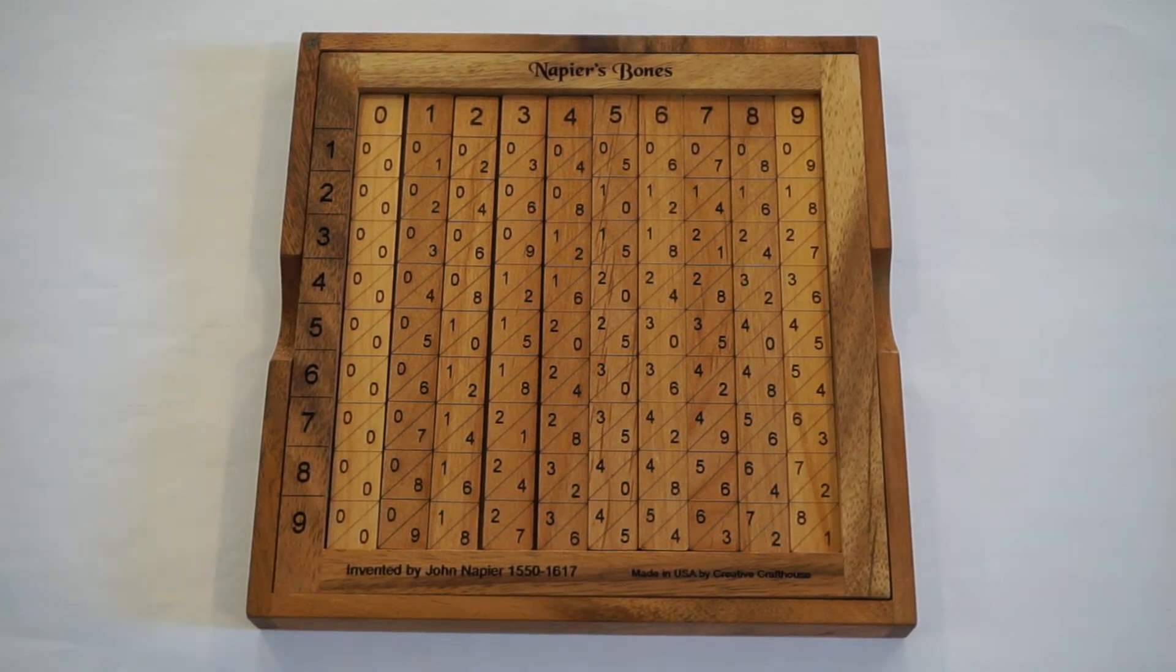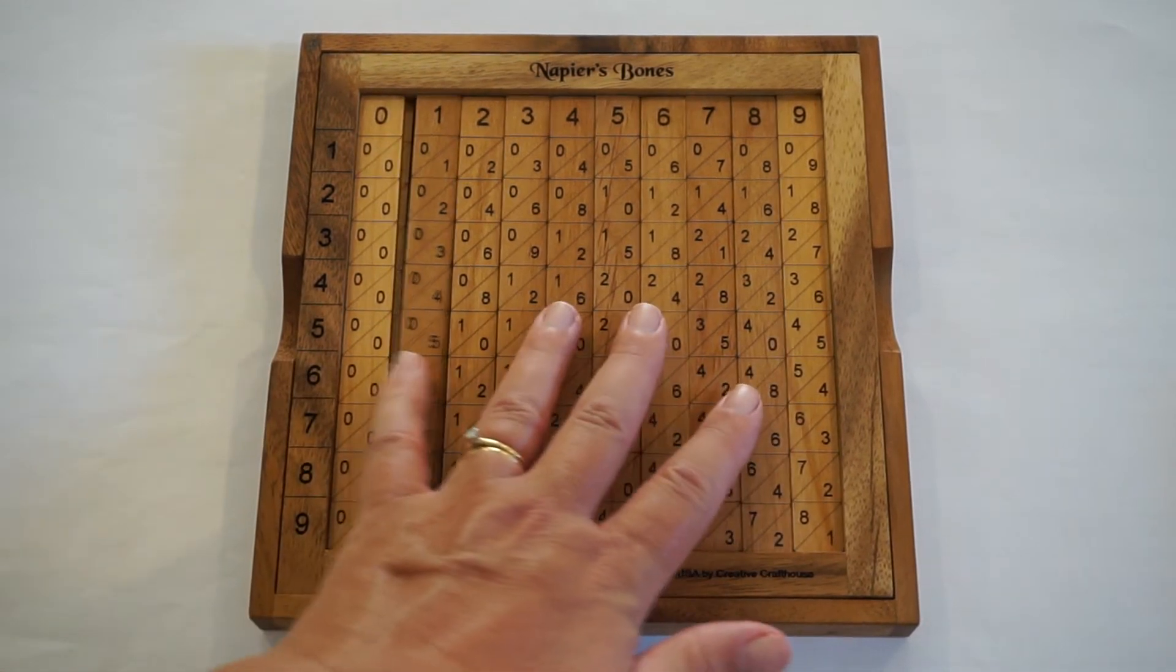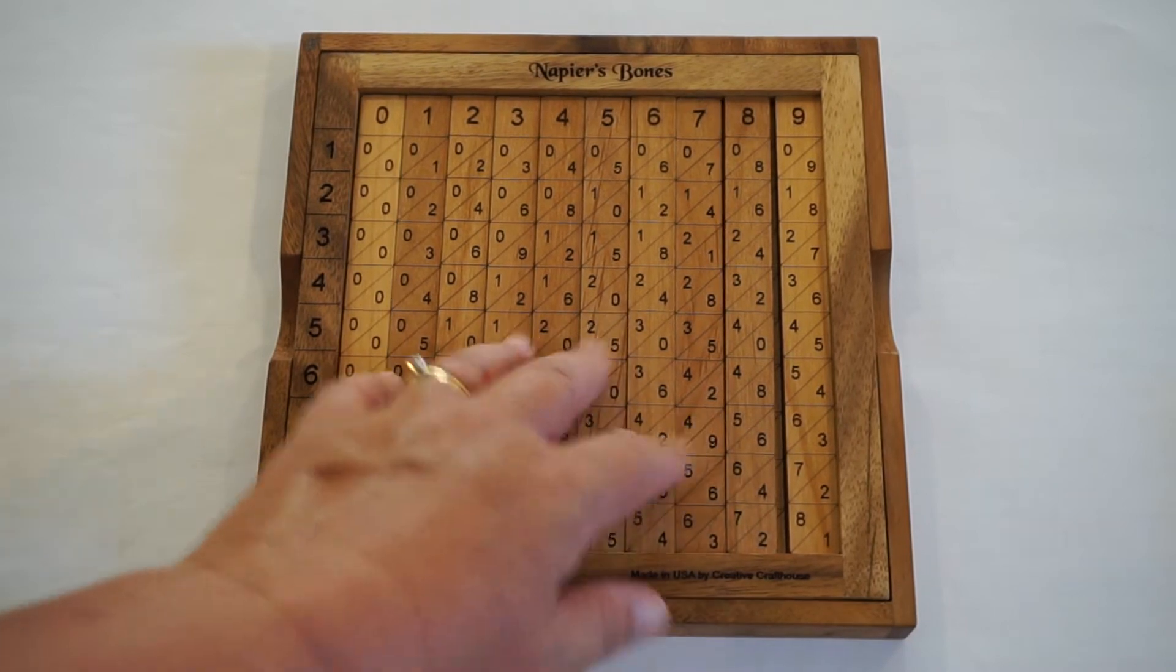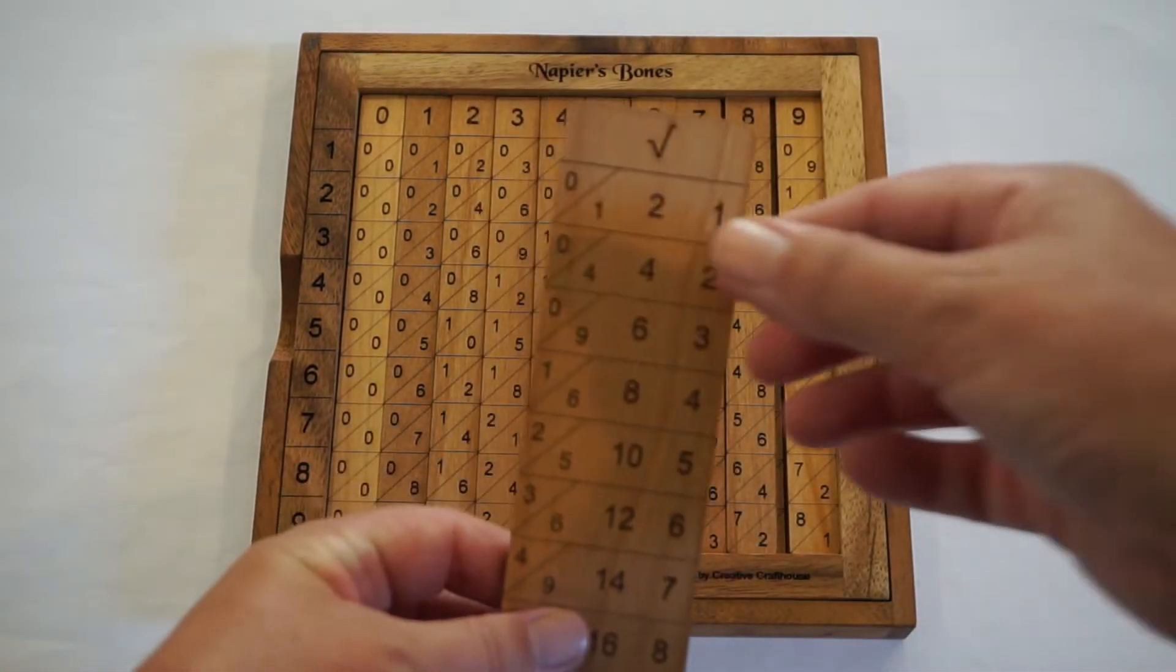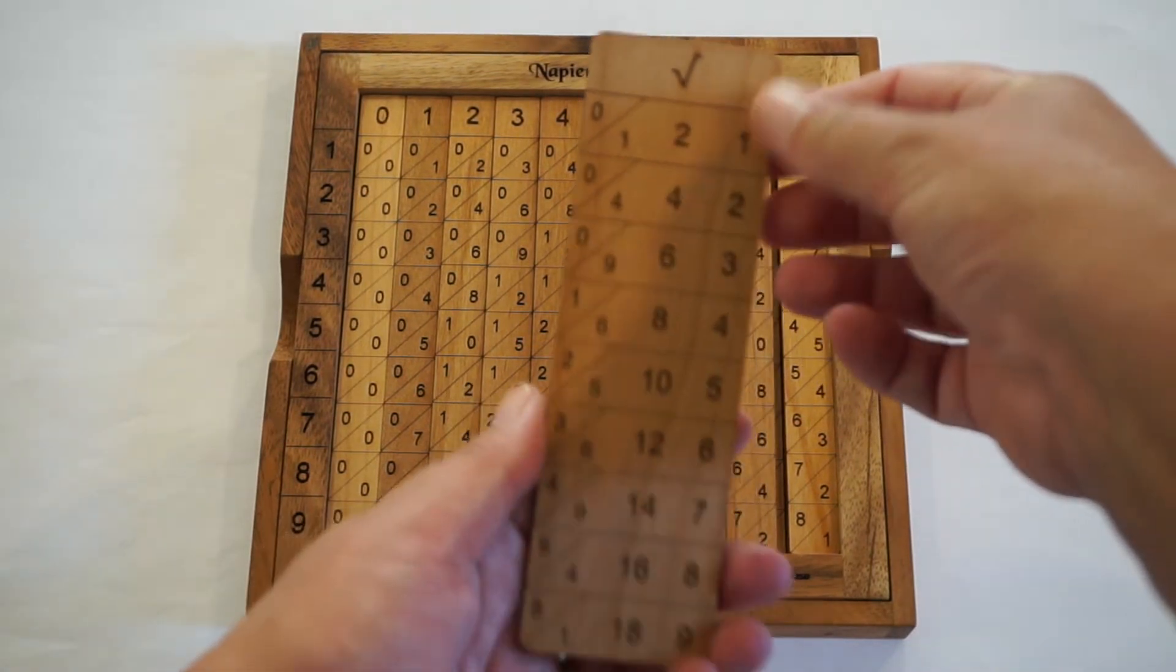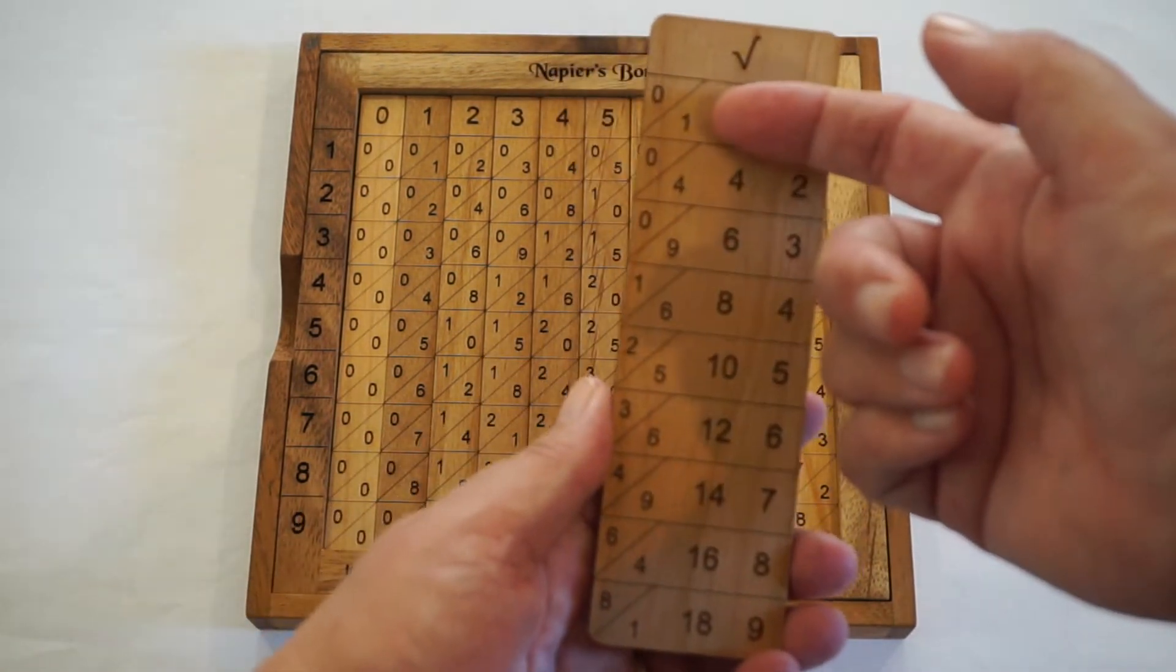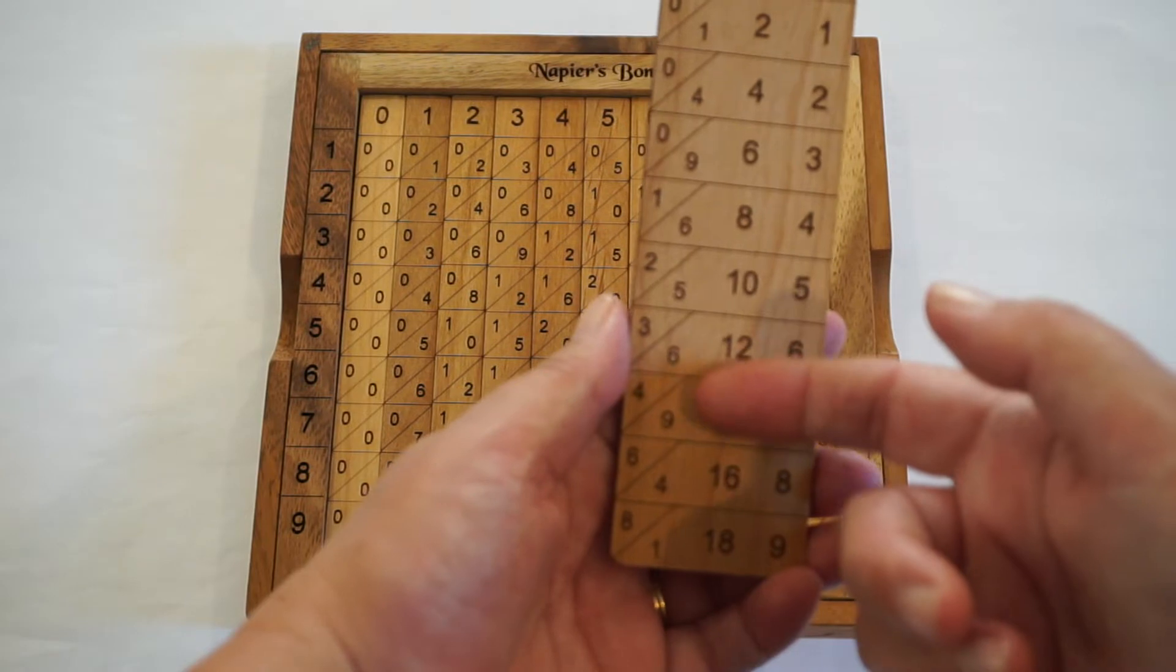In this video I'll be using Napier's rods in order to take square roots. So we have Napier's rods or bones here as they're called. We'll also need an extra rod or plate, and this is the square root rod.